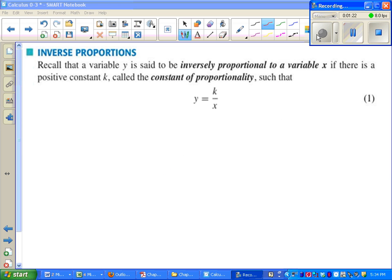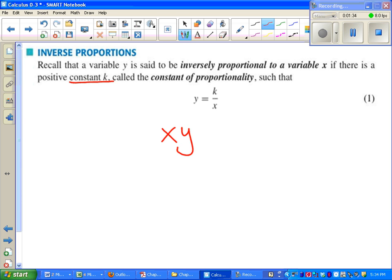We say two variables are inversely proportional if there's a positive constant. Again, constant means just a number. We call the constant of proportionality such that y equals k over x. An alternative and maybe easier way to think about that is when you multiply x and y together, you always get the same number. The way I went from formula one to formula two was just multiplying both sides by x.